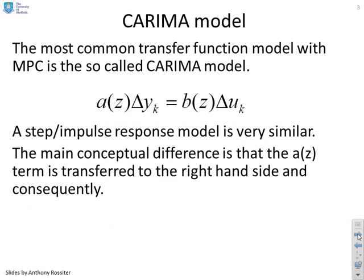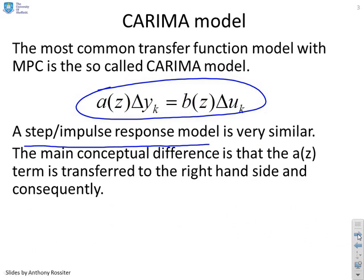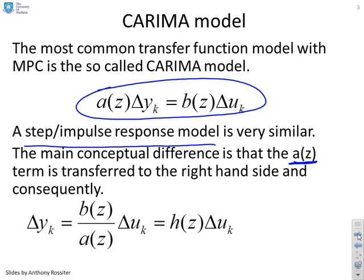CARIMA model, then. What we did in the previous video is we looked at how you would predict with models of this form: a(z)Δy equals b(z)Δu. Now a step or an impulse-response model is very similar in structure, it's still based on Z-transforms, and the main conceptual difference is that the poles, the a(z) term, is transferred to the right-hand side of the equation. So I can rewrite the equation as Δy equals b/a Δu, or alternatively, Δy equals h(z)Δu where h equals b/a.